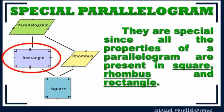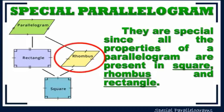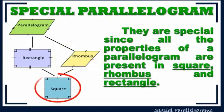In a rectangle, there are four right angles; apart from that, opposite angles are congruent, the same as in a parallelogram. In a rhombus, opposite angles are congruent and all sides have the same measure. In a square, there are four equal sides and each angle measures 90 degrees, or right angles.